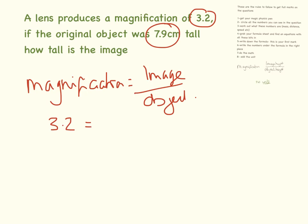So 3.2 equals, we need to find the image, so I always put an x in there, and the original object was 7.9. Now because we need to do some rearranging of the equation here, this is likely to only come up on a higher tier paper. I don't think I've seen much rearranging on a foundation paper.